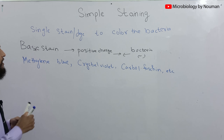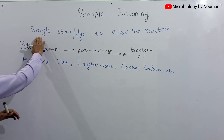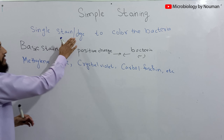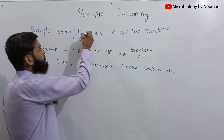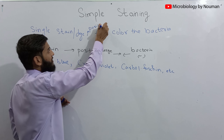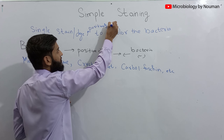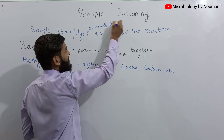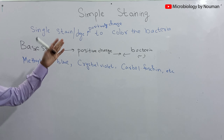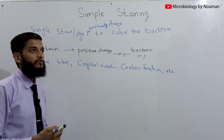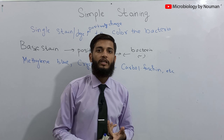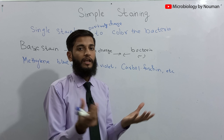So we can rephrase this as: in simple staining method, we use a single stain or dye that is positively charged. After simple staining, we can see bacterial structure, bacterial morphology, and bacterial arrangement — how the bacteria are arranged.